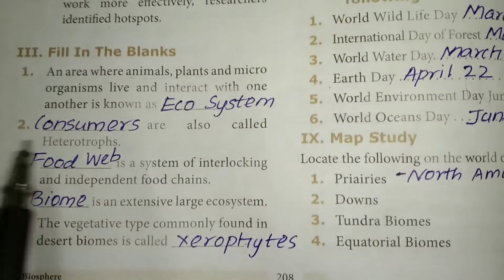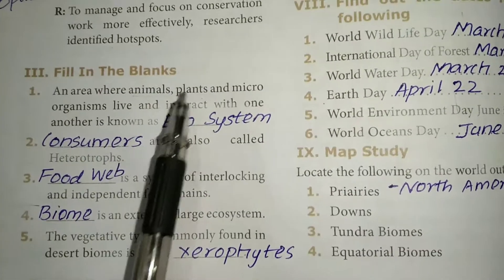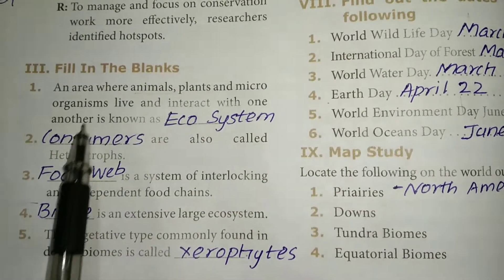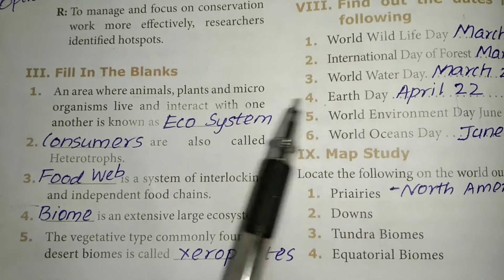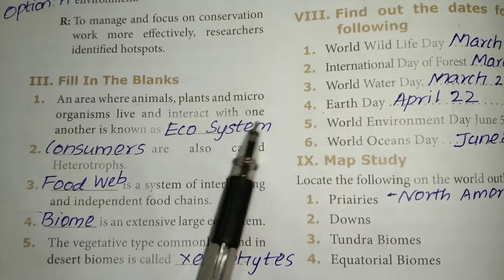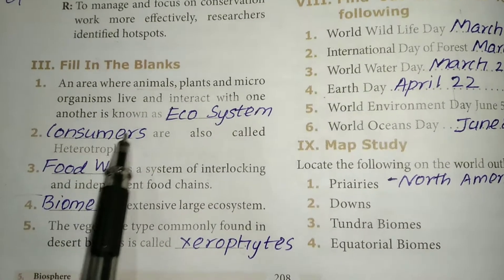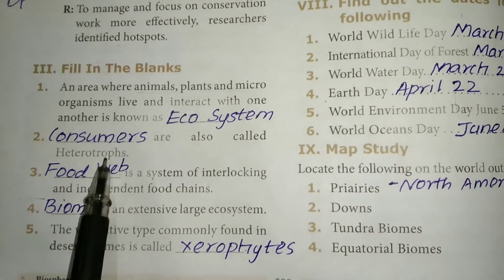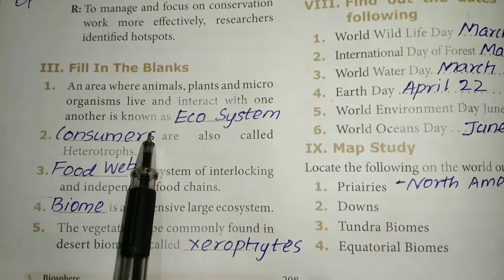Fill in the blanks. First one: an area where animals, plants and microorganisms live and interact with one another is called an Ecosystem. Second one: blanks are also called heterotrophs — the answer is Consumers.